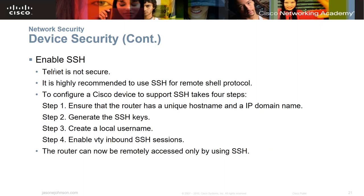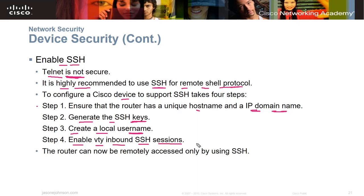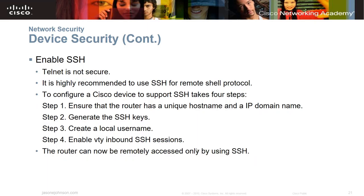Enable SSH — Telnet is not secure. It is highly recommended to use SSH for all remote shell protocols. To configure a Cisco device for SSH, you need four steps: ensure the router has a unique hostname and IP domain name, generate SSH keys, create a local username, and enable VTY inbound SSH sessions. The router can then only be accessed remotely via SSH — no Telnet.